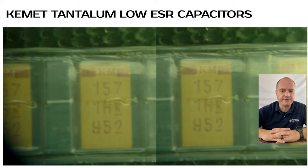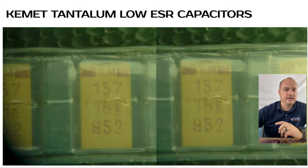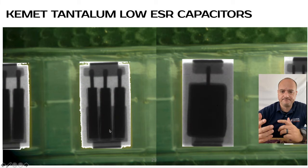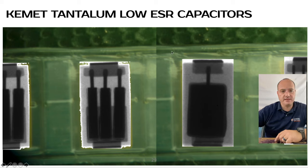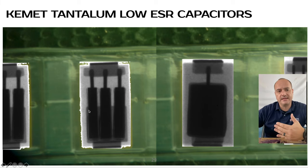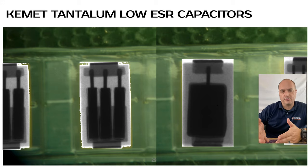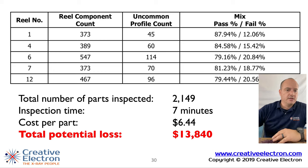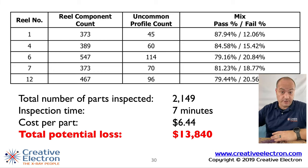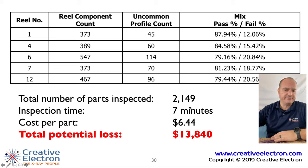Here are more examples. Starting with a Kemet tantalum capacitor — a fairly expensive part. A reel of those components shows they all look exactly the same with the same markings. When X-rayed, they look completely different — some are low-ESR caps, some are not. They might pass electrical tests but will very likely fail under the conditions where low-ESR capacitors have to operate. We looked at five different reels in about seven minutes, and the total potential loss for this small lot was almost $14,000.